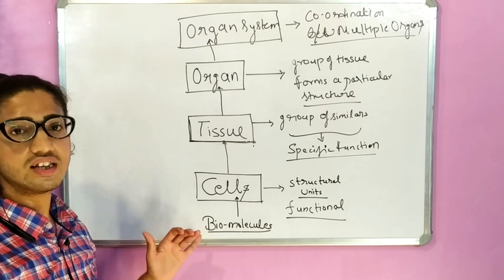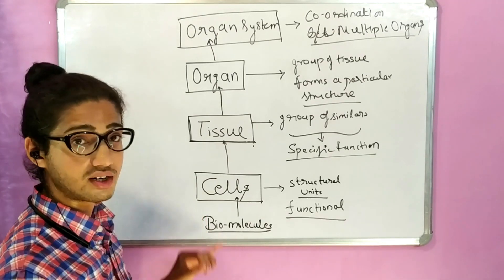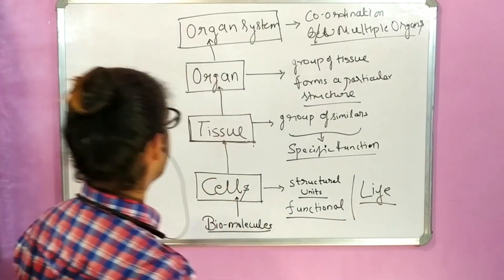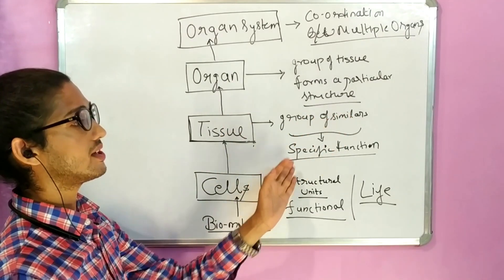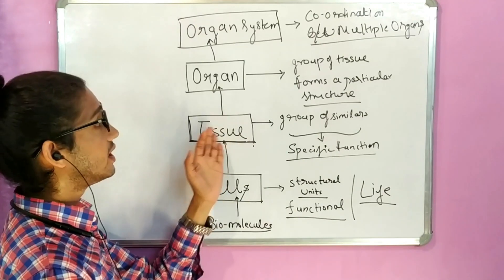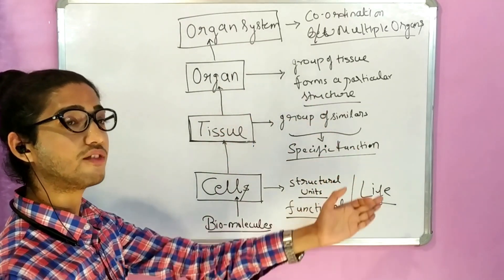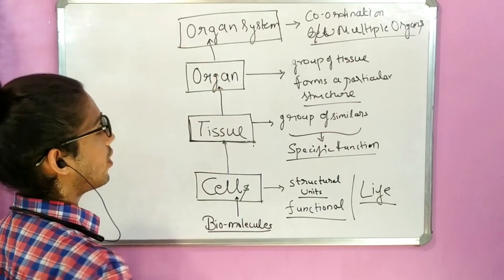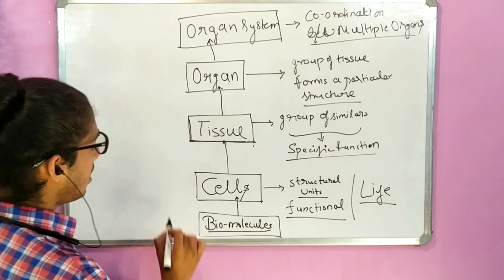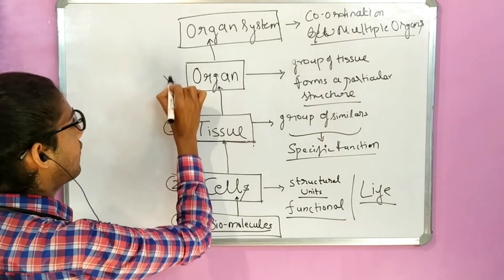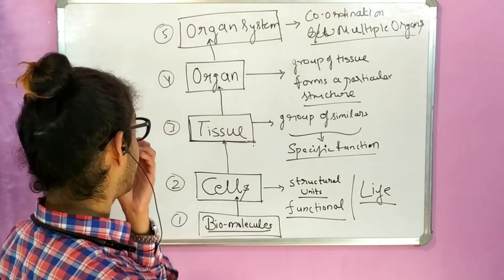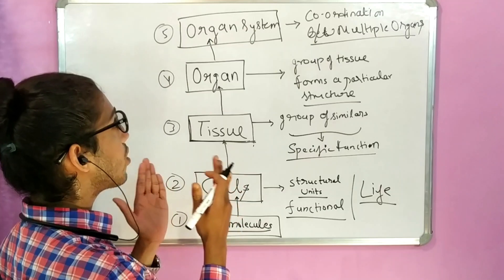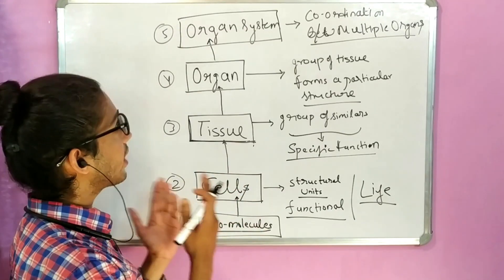To summarize the levels: the first level is biomolecules, which is the non-living level. From cells begins the first living level — the fundamental structural and functional unit of life. A group of similar cells performing a specific function forms tissue. Tissues come together to form a particular structure with a particular function, called an organ. Multiple organs coordinating amongst each other form an organ system. The final level is the organism — different organ systems put together form the organism.